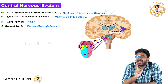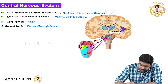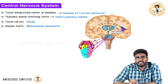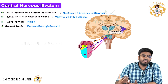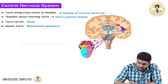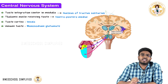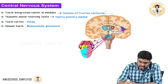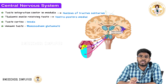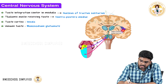For taste, the fibers come to the nucleus of tractus solitarius, and from there the second-order neurons go to the thalamic nuclei — specifically the ventroposteromedial nucleus, not the VPL. From the ventroposteromedial nucleus, the third-order neurons start and go to the cortex, because the cortex is where you feel all the sensations. The taste fibers go to the insular cortex, which is present deep inside the brain — not the somatosensory cortex.